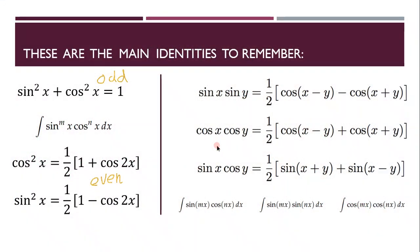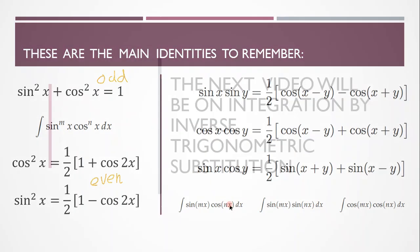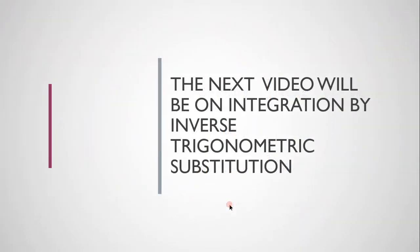So now remember I showed you this slide at the beginning. You should be able to understand what it means. So if you've got any odd-powered functions, trigonometric functions, use the Pythagorean identity. If you have any even ones, use the half angles and you apply it as many times as you can until there's no powers anymore. If you have a mixed trigonometric function, just apply these product identities and you're well on your way to doing well on your test. So the next video will be on integration by inverse trigonometric substitution.